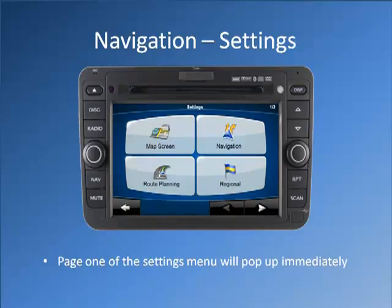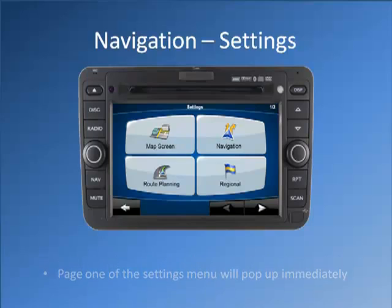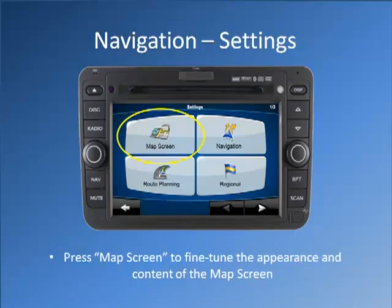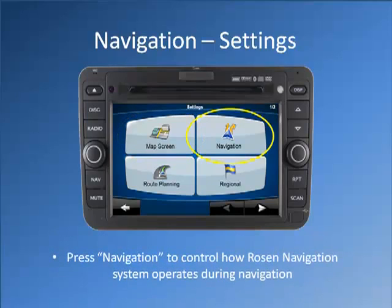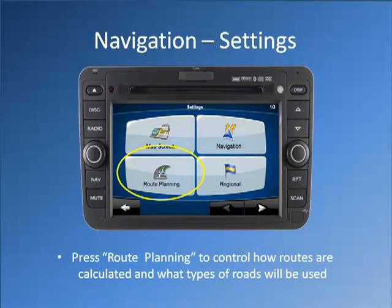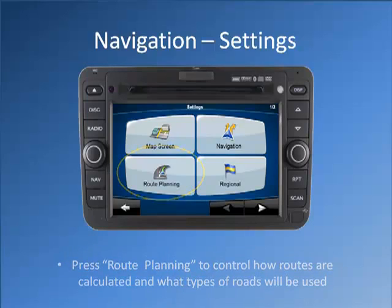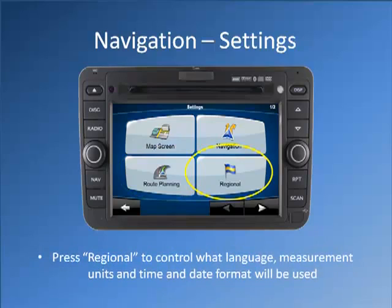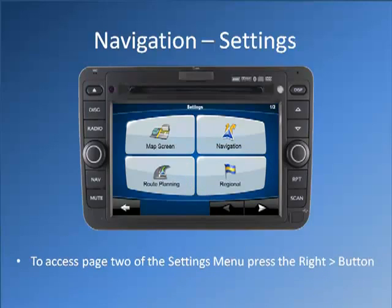Page 1 of the settings menu will pop up immediately. Press Map Screen to fine tune the appearance and content of the map screen. Press Navigation to control how the navigation system operates during navigation. Press Route Planning to control how routes are calculated and what types of roads will be used. Press Regional to control what language, measurement units, and time and date format will be used. To access page 2 of the settings menu, press the right arrow button.